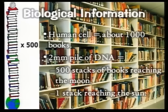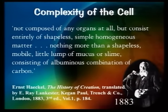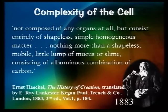Unfortunately, we've inherited a lot of scientific thinking from Darwin's era. Scientists in Darwin's day viewed the cell very differently than we know it today. Ernest Haeckel, one of the most famous evolutionists of Darwin's day — who named the bacterial kingdom Monera — described the cell in 1883 as: 'not composed of any organs at all, but consisting entirely of shapeless, simple, homogeneous matter. Nothing more than a shapeless, mobile little lump of mucus or slime.' When that's your view of the cell, it's easy to envision such a thing forming in a little pond full of scum through natural processes. But we know today that the cell is far from that.